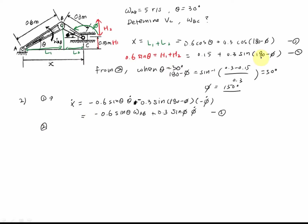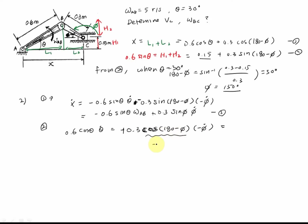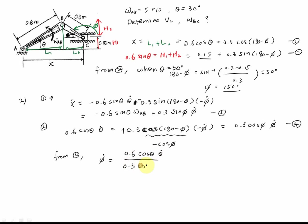Taking the derivative of equation 2: 0.6 cosine theta times theta-dot equals 0.3 cosine(180 minus phi) times phi-dot. Since cosine(180 minus phi) equals negative cosine phi, this becomes 0.6 cosine theta times theta-dot equals 0.3 cosine phi times phi-dot. That is equation 4. From equation 4, phi-dot equals 0.6 cosine theta times theta-dot divided by 0.3 cosine phi.